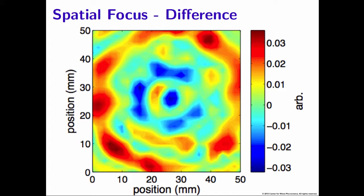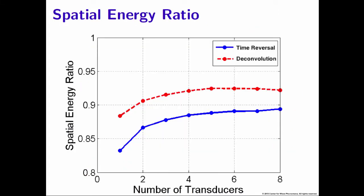This came as a surprise because, as stated earlier, deconvolution was created to improve temporal focusing — it was done in the temporal domain. We re-ran the experiment with multiple transducers and compared the spatial focus. Importantly, the difference between deconvolution and time reversal in improving spatial focusing is not as significant as in the temporal focus — approximately 7% or less — whereas with temporal focusing we had 70% vs. 15%, and now we're looking between 87%, 89%, and 83%.